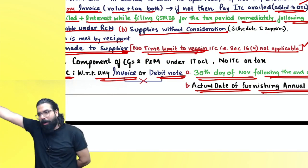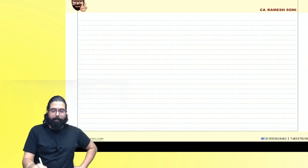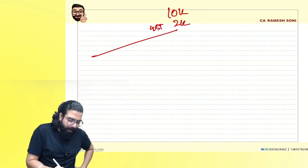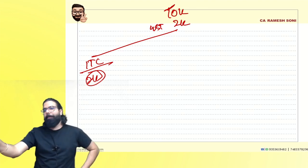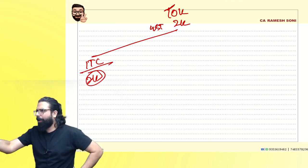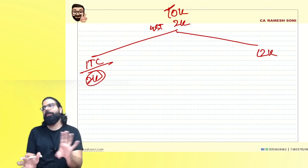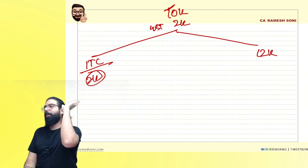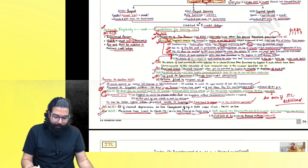Section 16(3) — Depreciation and ITC: If you buy machinery for ₹10,000 with ₹2,000 GST — you can take ₹2,000 as ITC and claim depreciation on ₹10,000. Or, you can capitalize the full ₹12,000 (including GST) and claim depreciation on ₹12,000, but then you cannot take ITC. You cannot take both ITC and depreciation on the tax component.